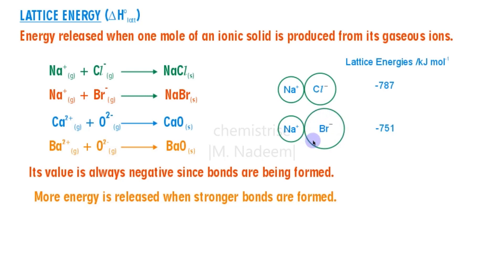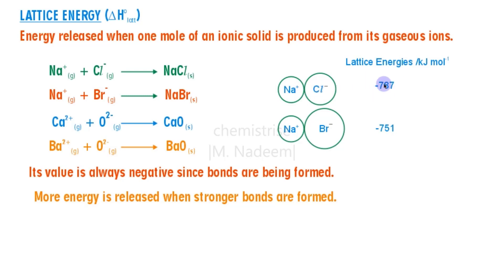Due to the larger size of bromide, its negative one charge is spread over a bigger volume, so the charge density of the Br⁻ ion is less — it will have a weaker attraction with sodium. The chloride ion, being small in size with a negative one charge, has more charge density, so it forms a stronger bond with sodium ions. That's why sodium chloride has a more negative lattice energy.